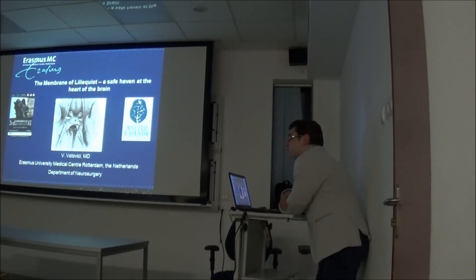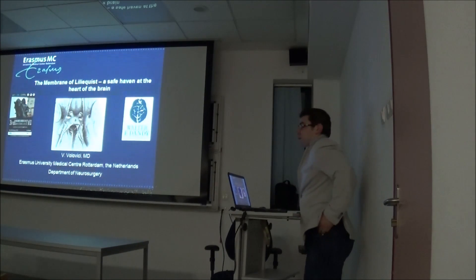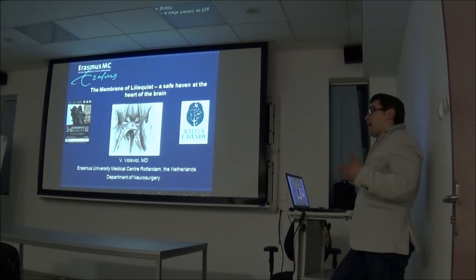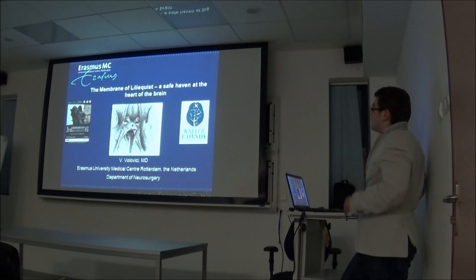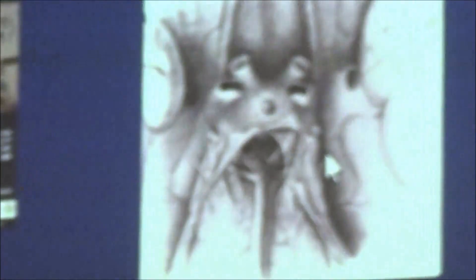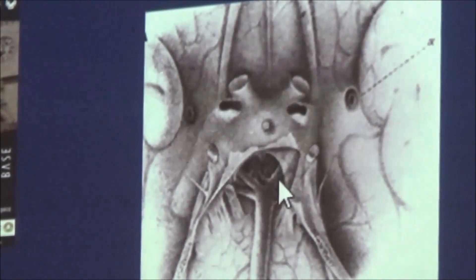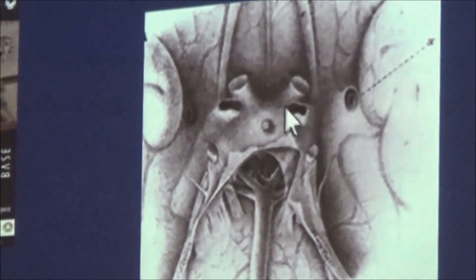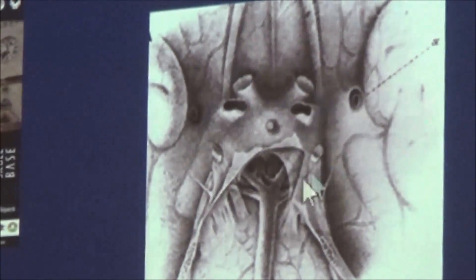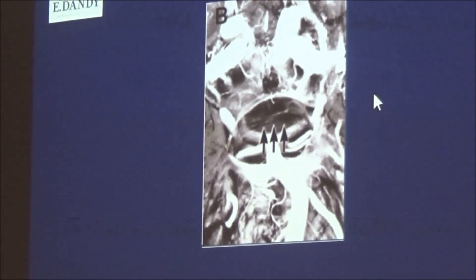What is the membrane Liliequist? For cellular and paracellular anatomy, and actually of arachnoid membranes and everything concerned with the basic brain, this is a very interesting structure. What you see here is a picture from Key and Retzius — they had an amazing atlas. You see the chiasm and the basilar artery with SCAs, and you see this weird leaf here: the arachnoid membrane. This is actually the membrane Liliequist. At that time it was not yet called the membrane Liliequist — that name came much later.